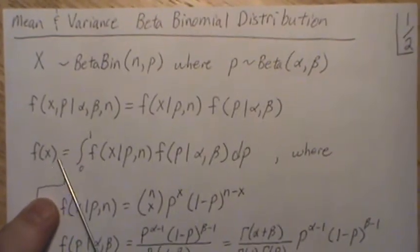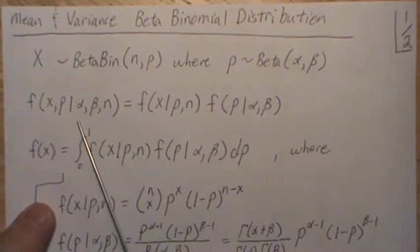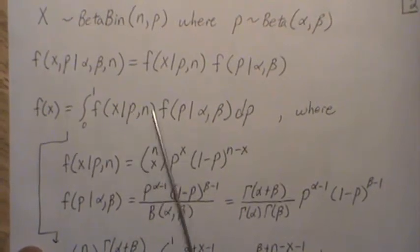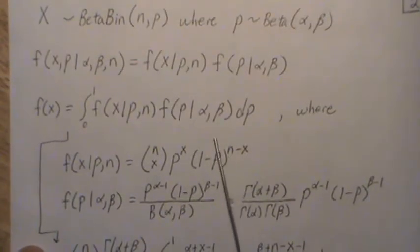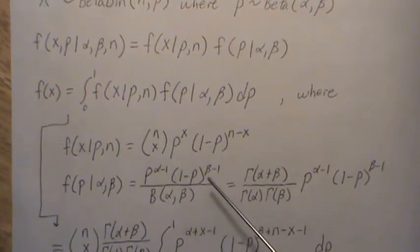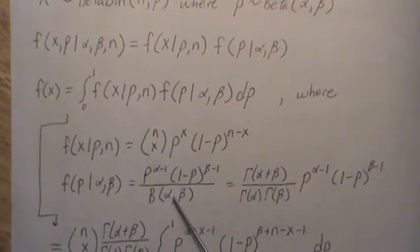So f of X — the beta binomial random variable — is obtained by integrating out P from the joint distribution. This piece is a binomial distribution given N and P, and this piece is the beta distribution. It can be written as P to the alpha minus 1 times (1 minus P) to the beta minus 1, divided by the beta function, though I prefer to write it using gamma functions. This piece is 1 divided by the beta function, so together it forms the density of a beta.